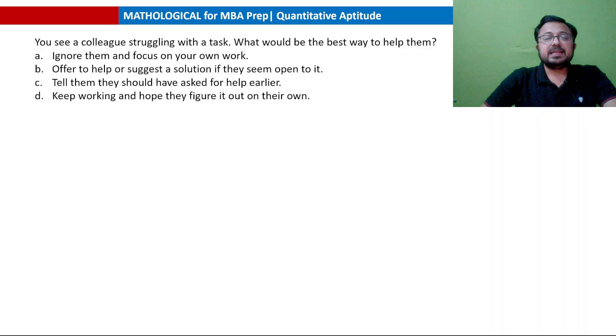You see a colleague struggling with a task. What would be the best way to help them? Ignore them and focus on your own work - never the answer. Offer to help or suggest a solution if they seem open to it. Tell them they should have asked for help earlier. Keep working and hope they figure it out on their own. A and D are definitely not the answer. Between B and C, B is much better. Option C says you should have asked earlier, but you're not helping. B is definitely better - offering to help or suggesting a solution if they seem open to it.